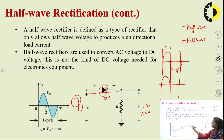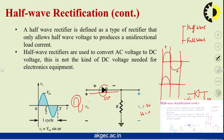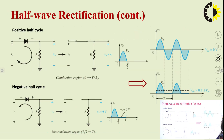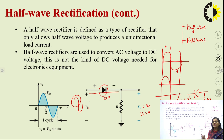If we change the orientation of the diode, the circuit will work differently. In this new orientation, the diode will be forward biased in the negative cycle, so we get output only in the negative cycle. So a half wave rectifier converts only one cycle of the input — either positive or negative — and we get output only for that one cycle.